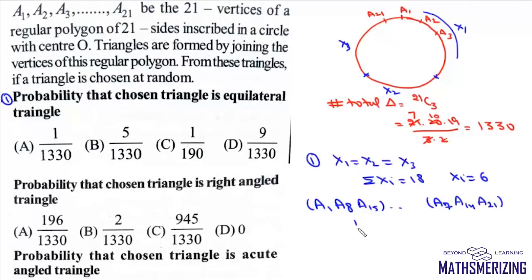So altogether we have 7 cases in which an equilateral triangle is formed. So this required probability will be 7 upon 1330, which is basically 1 by 190, and that's your option C.